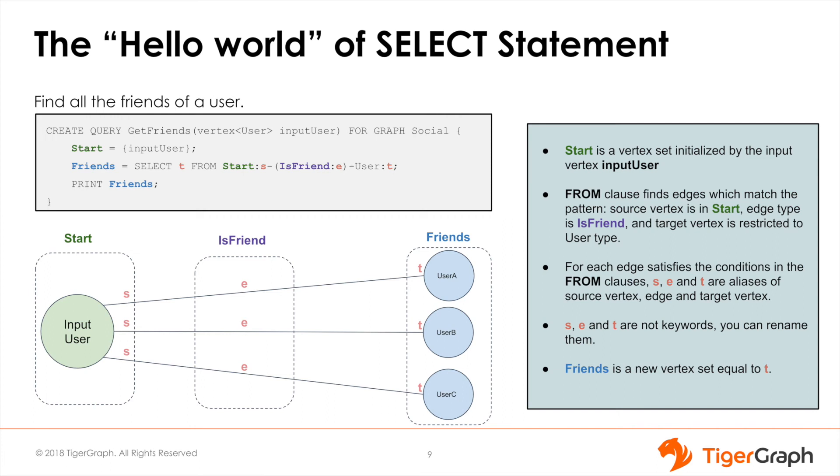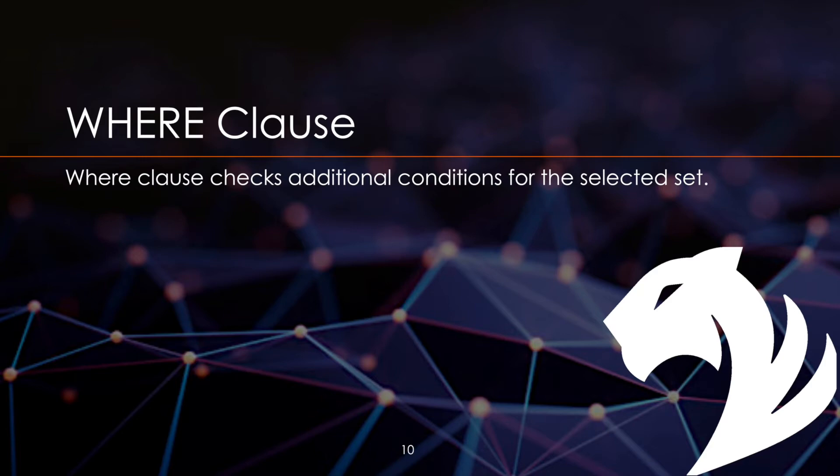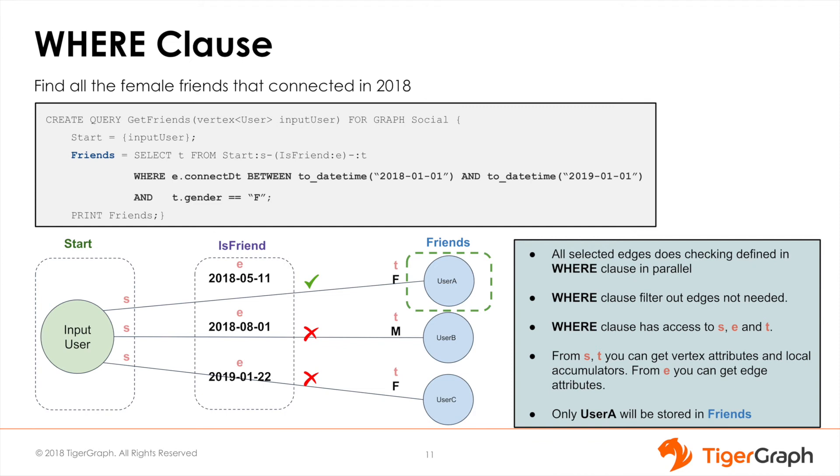These are the most basic and essential elements of a SELECT block. Now let's move on to the WHERE clause. In previous slides I showed you how to traverse the graph by selecting edges and vertices under designated types.